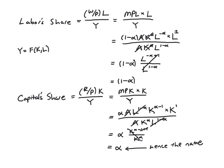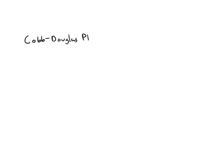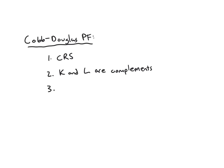To summarize, with the Cobb-Douglas production function we noted three important things: first, it is constant returns to scale; second, K and L are complements; and lastly, capital and labor each have constant factor shares. Thanks for watching.